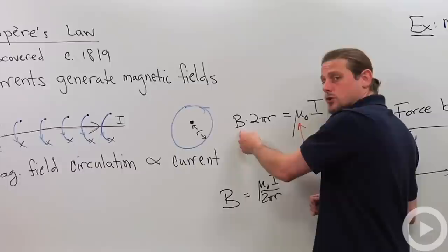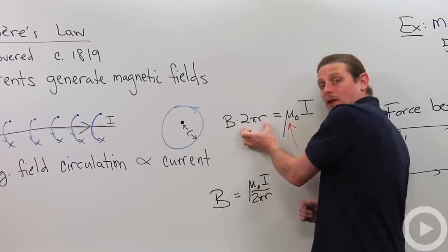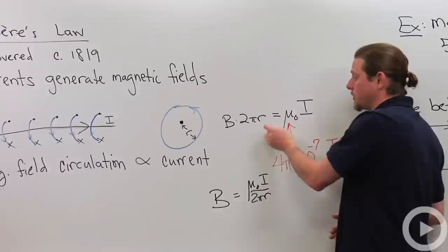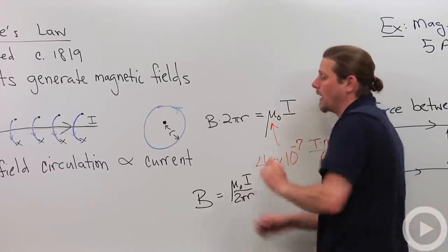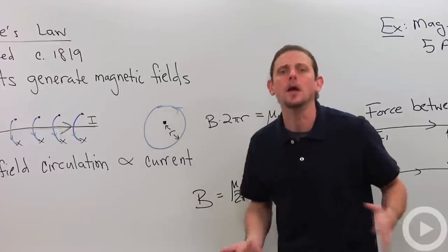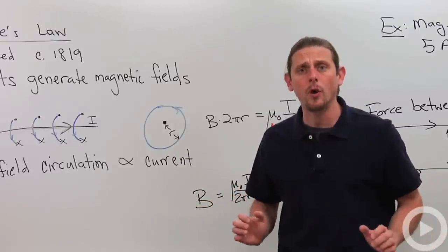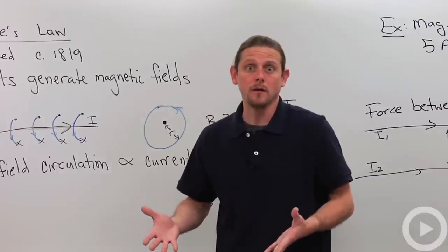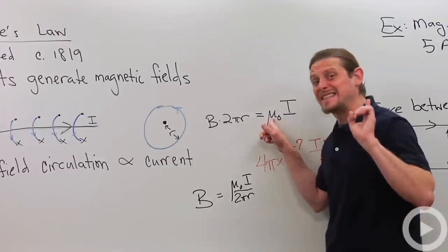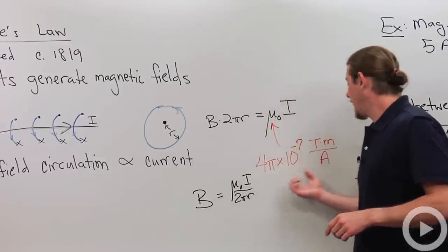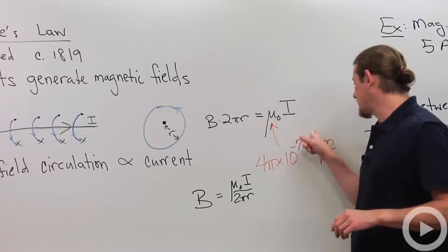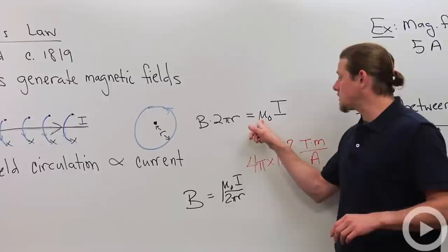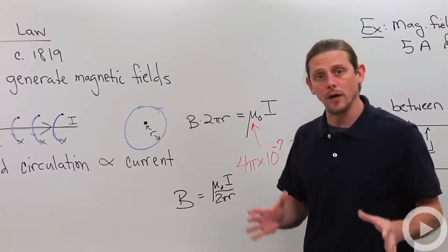Now, Ampere's law says that the magnetic field circulation, which is the magnetic field times the length of this curve, which is 2πr, because it's a circle, is proportional to, that means it equals a constant times the current that's coming out of the board. Now, what is this constant? Well, we could actually measure it, but in reality, what people do is they use the freedom that we have to define the ampere as a unit of measurement in order to make this constant exactly 4π times 10 to the minus 7 in SI units. So those units are Tesla meters per amp. Alright, so 4π times 10 to the minus 7. That's μ0. It's called the permeability of free space.